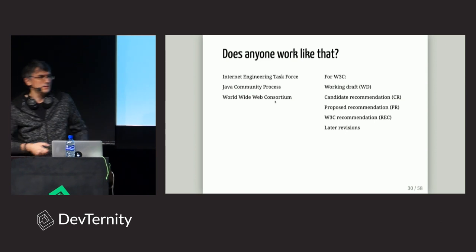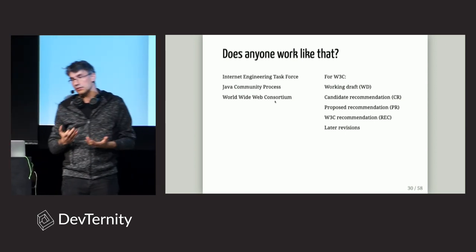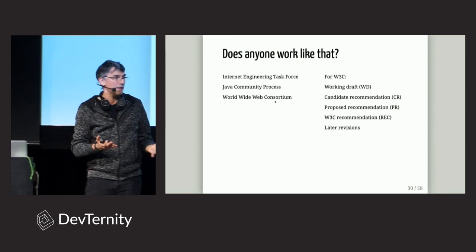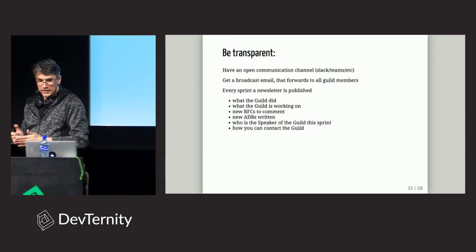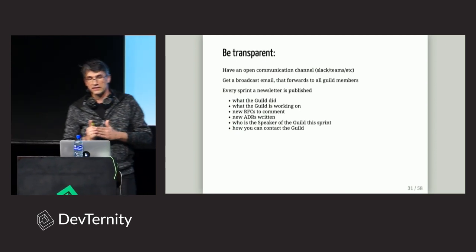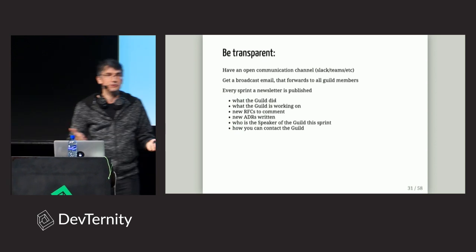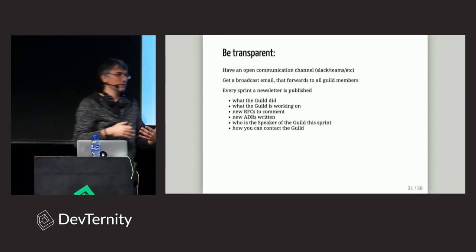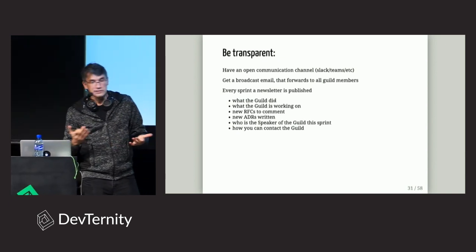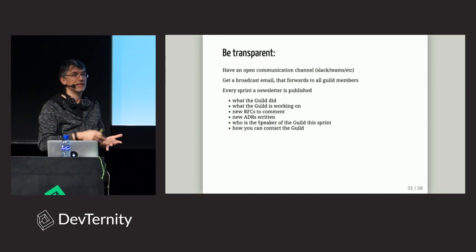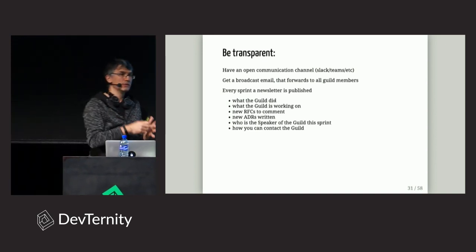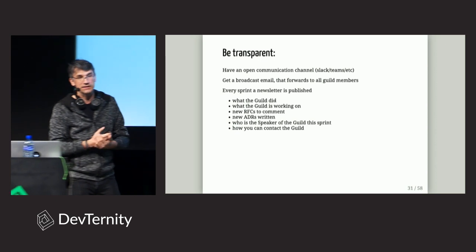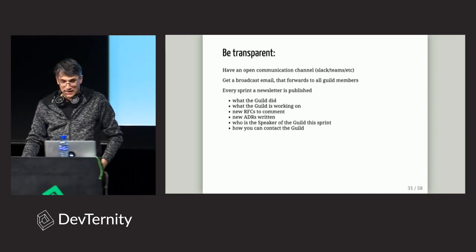Does any large organization actually work this way? Yes — a lot of organizations, including ones much larger than a single company, work that way and it works. We decided to be as transparent as possible. Apart from open communication channels — email, Microsoft Teams in our case — we also publish every single sprint a newsletter. In the newsletter we write what we did this sprint as a guild, what we're working on next sprint, all RFCs published, all decisions made, and who the speaker is and how to contact them.